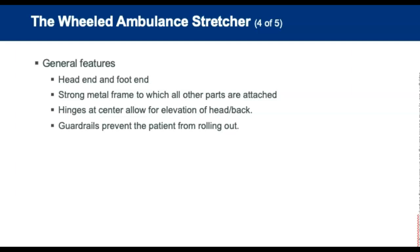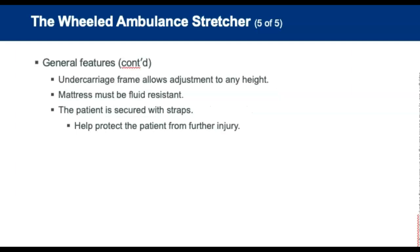Some general features of stretchers: they have a specific head and foot end and a strong rectangular tubular metal mainframe to which all other parts are attached. Retractable guardrails prevent the patient from rolling off the stretcher. The undercarriage frame allows the litter to be adjusted to any height and locked in place. Hinges at the center allow the head end to be elevated. The mattress is fluid resistant for easy cleaning and disinfecting, and the patient is secured with straps.